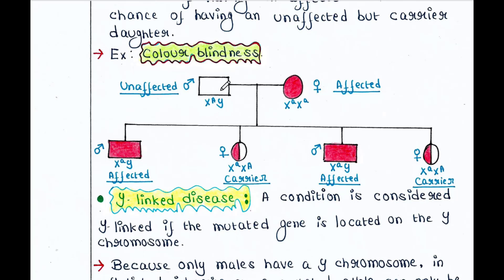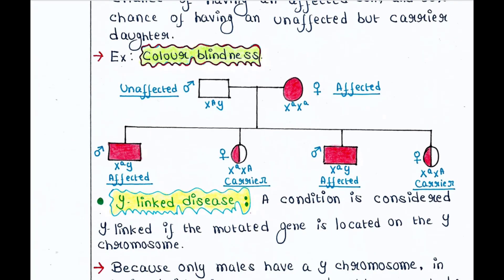In one more case, the male is unaffected and the female is affected with both alleles mutated. There is a 50% chance of having an affected son and 50% chance of having an unaffected but carrier daughter. The male child receives the mutated allele from mother and since both her alleles are mutated, all sons will be affected. Female children receive one normal copy from the father, making them carriers but not diseased. This type of mutation is seen in color blindness.